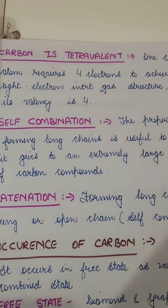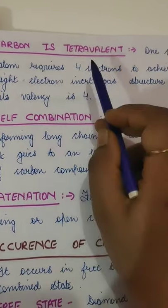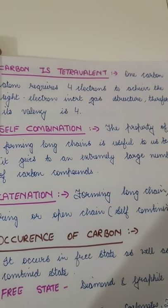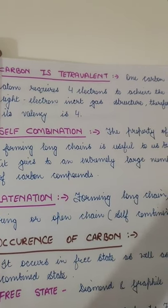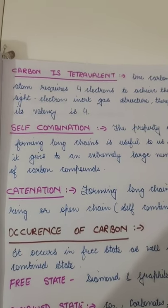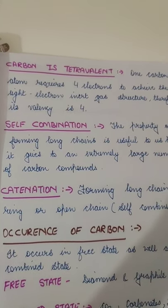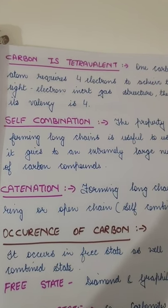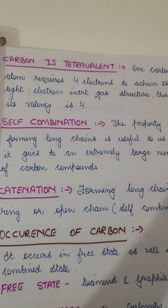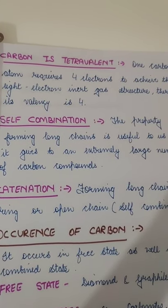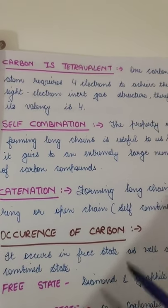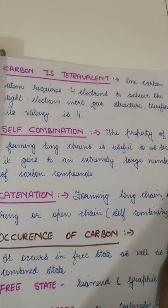Another unique property of carbon is that it is tetravalent. Carbon has four electrons in its outermost shell, giving it a valency of four. The combining capacity of any atom is called its valency. Because carbon combines using all four electrons, it is called tetravalent. So carbon is a tetravalent element.